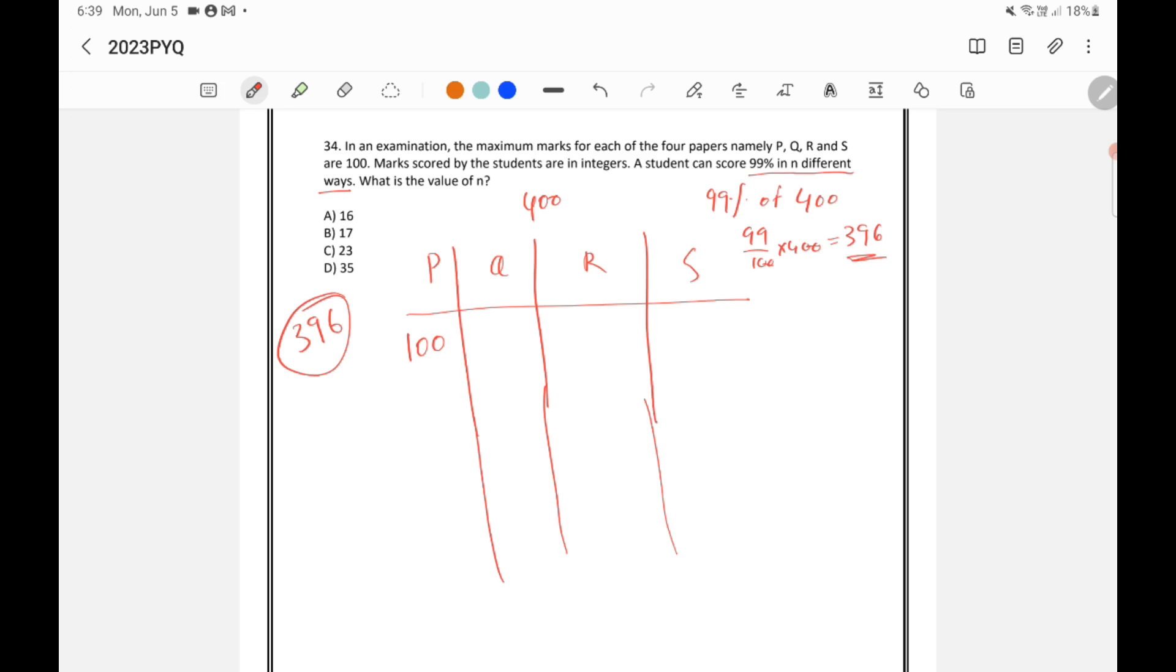Let's say this is P. In P, he scored 100. In Q also, he scored 100. And R also, he scored 100. And in S, he scored 96. So 100, 100, 100, 96 is a possibility.